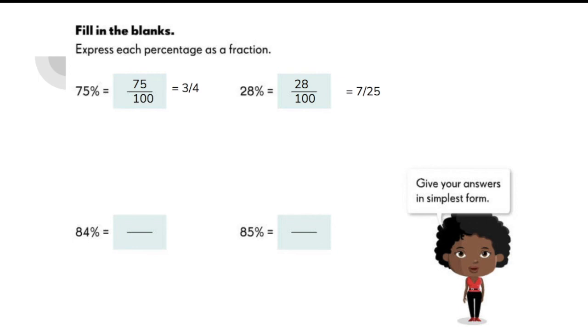What about 84%? What is the simplest form of 84%? It's 21 out of 25. And for 85%, it is 17 out of 20.